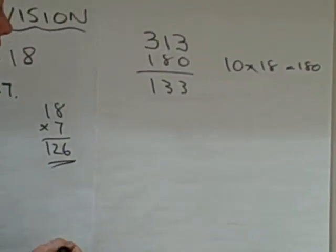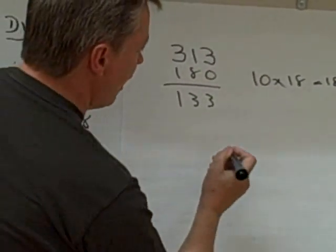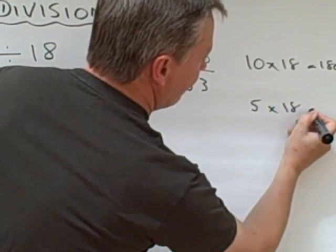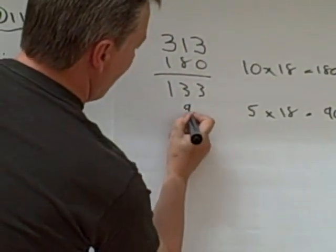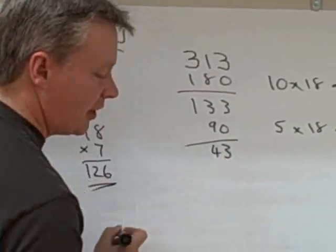So the other thing I can do is I can say, well, I can take another chunk of 18s off, and I'm going to say 5 times 18. And 5 times 18 is 90. So there's another chunk I can take off there. And that leaves me now with 43.